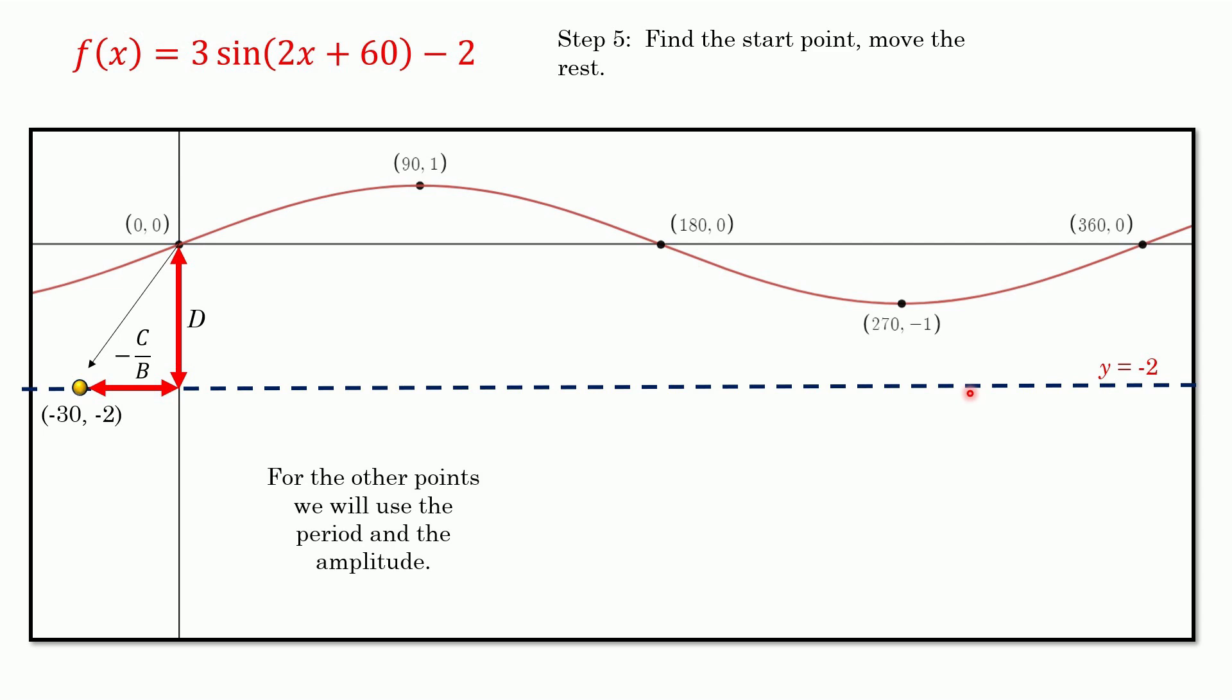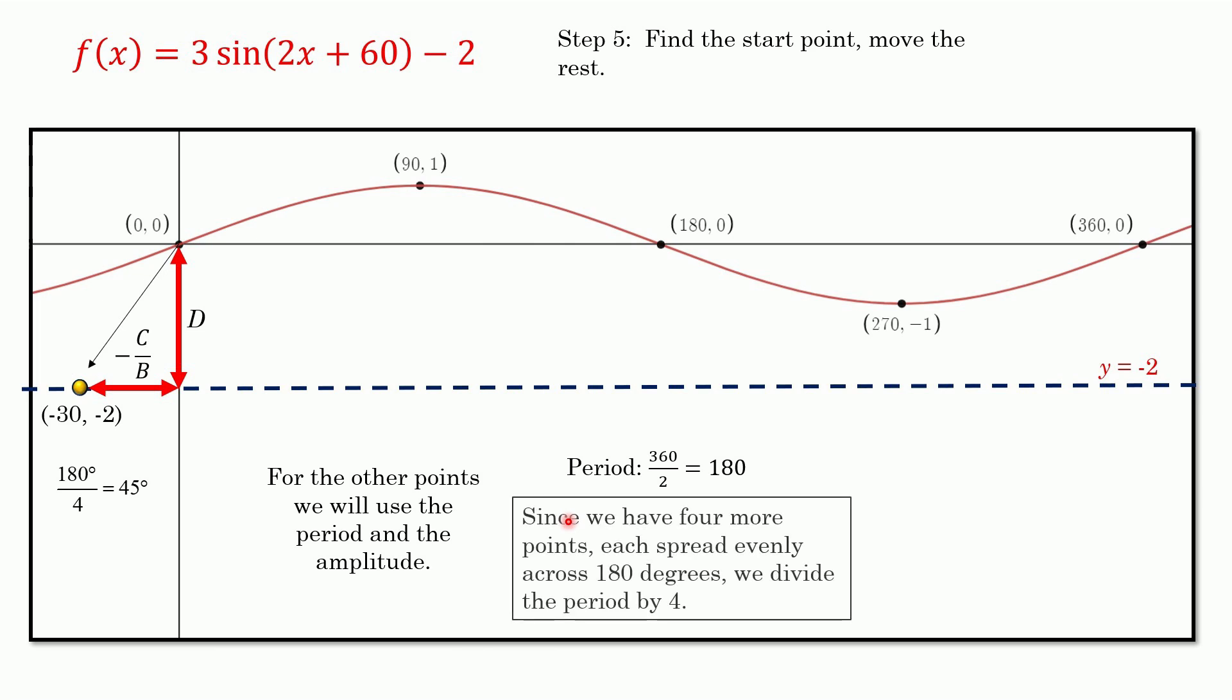The period changes because B is 2. So the period is 360 divided by 2, which is 180 degrees. It's shorter. Now, we have to break that whole period up into four parts, because we have a maximum, an intercept, a minimum, and an intercept. That's one part, two parts, three parts, four parts. If it's 360 degrees, you take 360 divided into four equal parts. 360 divided by four is 90. That's why each of these points are 90 degrees apart. Now, we're going to do the same thing, but we're going to take that 180 and divide it by four. We're going to get, each of these is going to be 45 degrees apart instead of 90 degrees apart. This is how you're going to do it.